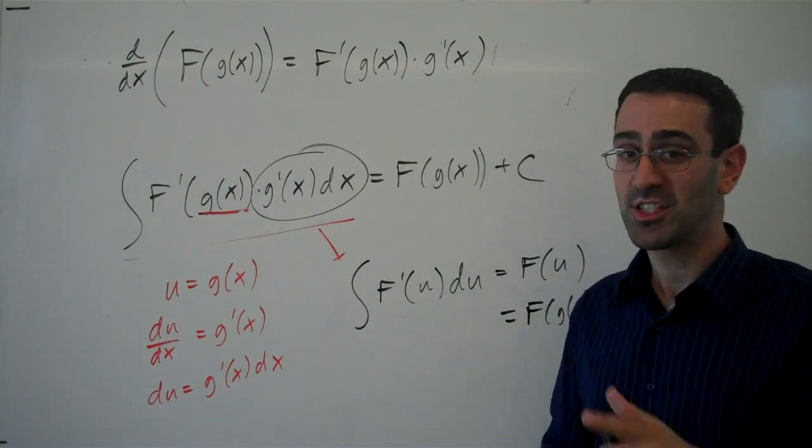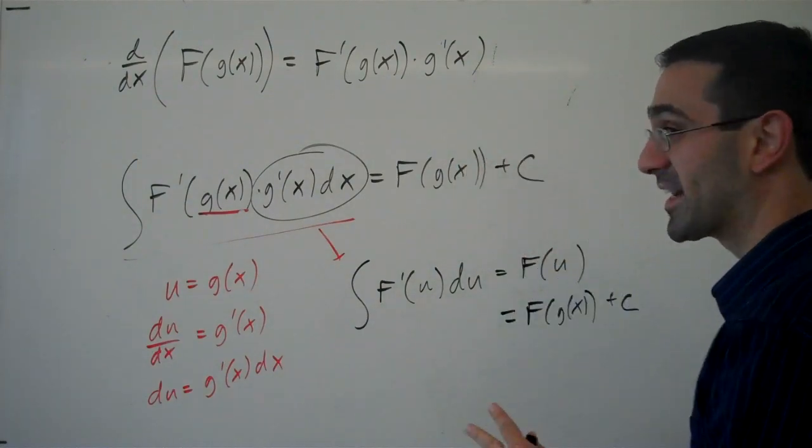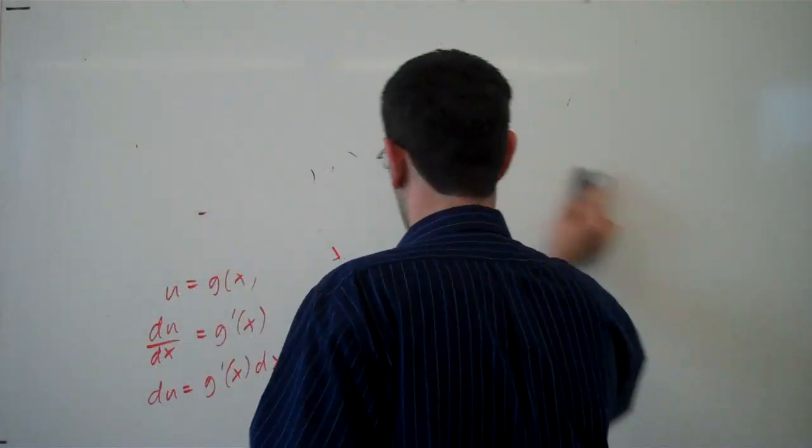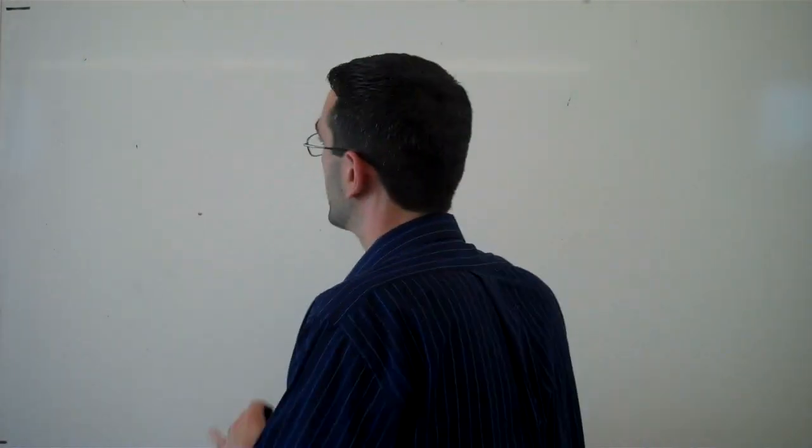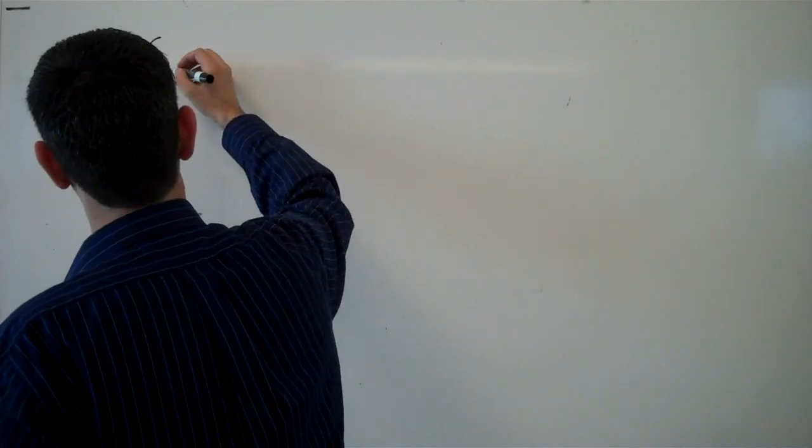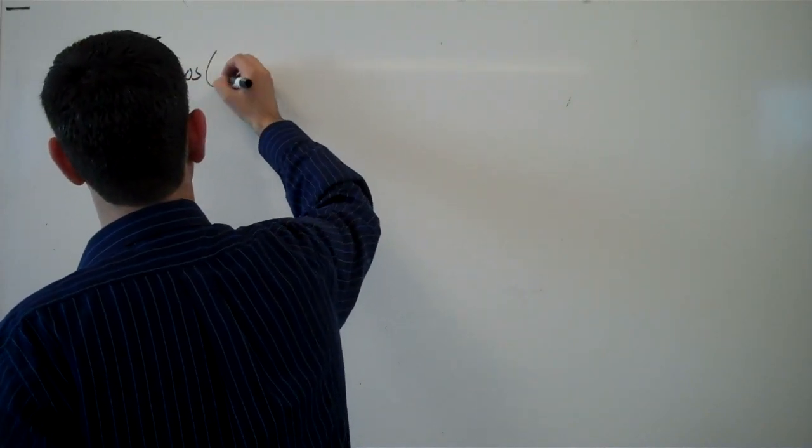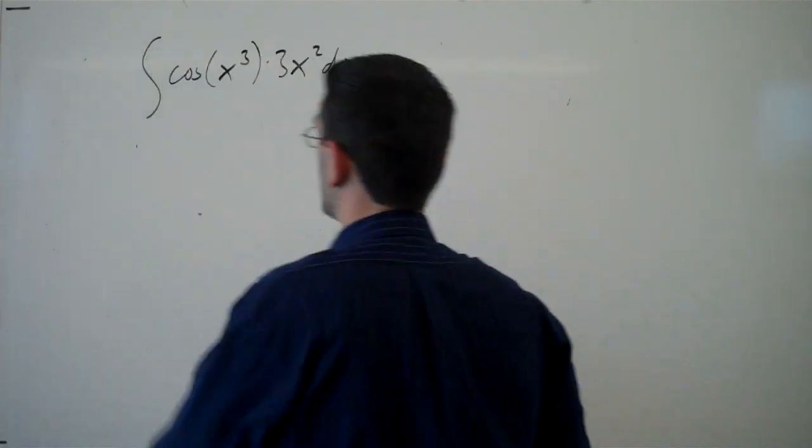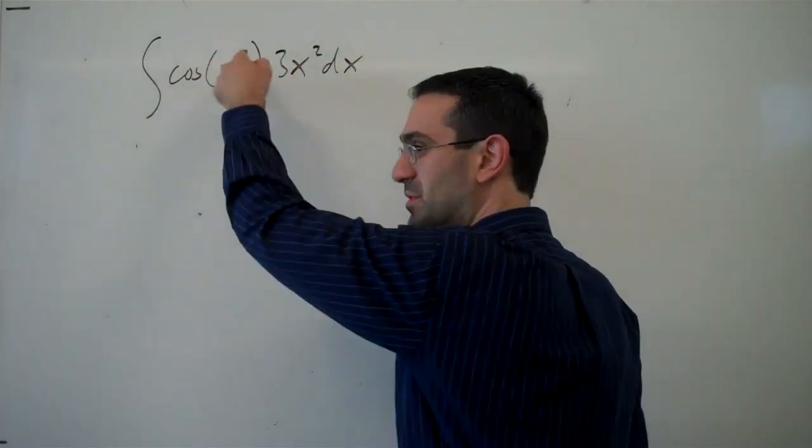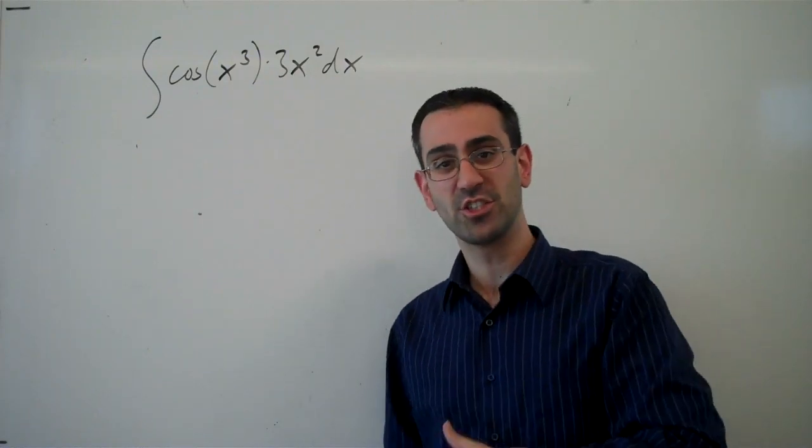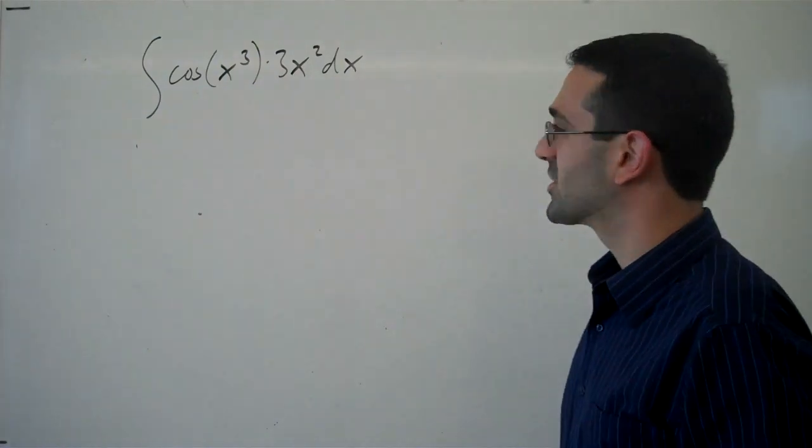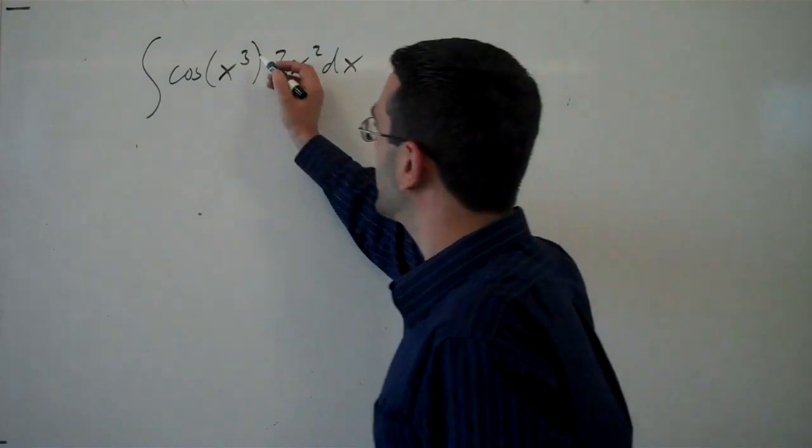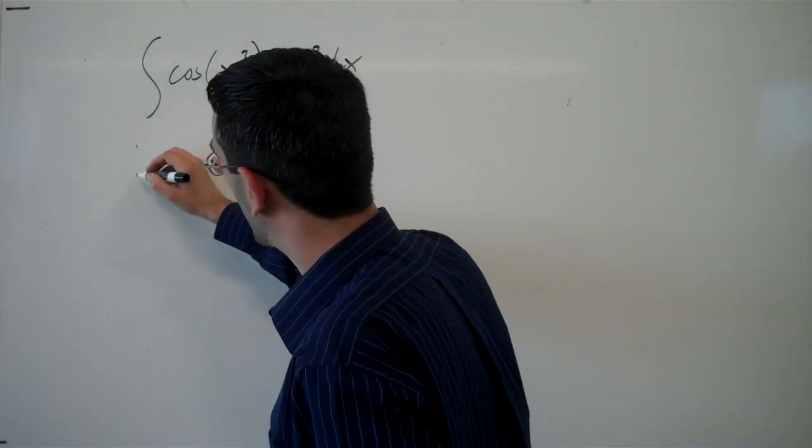That may not have made any sense, so let's try it with an example because that will make a lot more sense. Let's say we were integrating cos(x³) times 3x² dx. The idea is we would say I have a composition. Composition implies chain rule. So we're thinking that we need to undo chain rule. We pick the inside function to be our u. So we'll say u is x³.